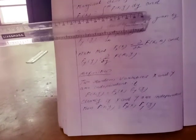The marginal density of capital X is given by f_X(x) = integral from minus infinity to infinity of f(x,y) dy. The marginal density of capital Y is given by f_Y(y) = integral from minus infinity to infinity of f(x,y) dx.